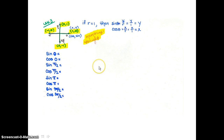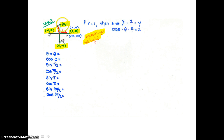We want to memorize those ordered pairs for the quadrantal angles, but honestly it's really more common sense. If you have a circle with a radius of one and you go over one unit from the origin, you're at (1, 0). If you go up one unit, you're at (0, 1). If you go back one unit, you're at (-1, 0). And if you go down one unit, you're at (0, -1). So it's easy to find those four ordered pairs without memorizing.